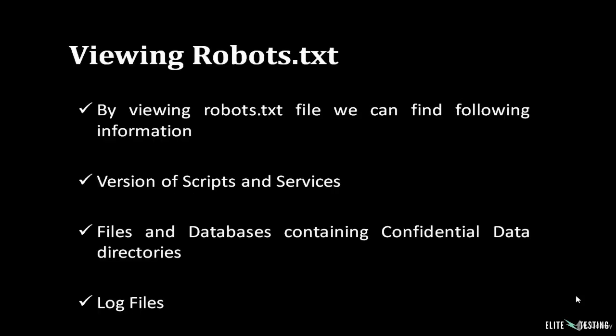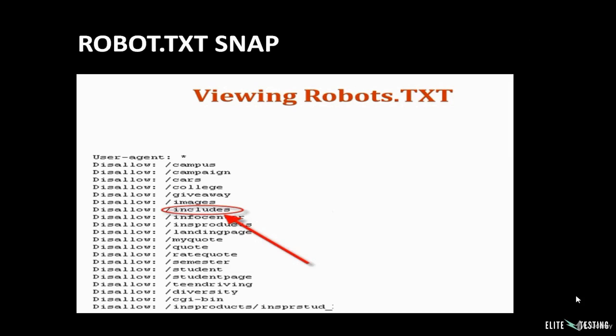We can also get information by viewing the robots.txt file. The type of information we collect from robots.txt includes the version of scripts and services, files and databases containing confidential data, and directories and log files. These details can be used by a hacker to plan their attack. In this example you can see a snapshot of a robots.txt file and the information it displays — it can be beneficial if used in a proper way.